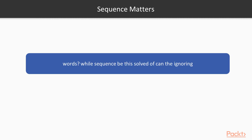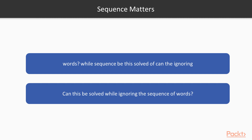For example, if you take a look at this sentence, can you make any sense out of it? They are a bunch of words but they don't make any sense. On the other hand, if we change the sequence of these words, it makes a whole lot of sense — this is a proper sentence saying 'can this be solved while ignoring the sequence of words.'